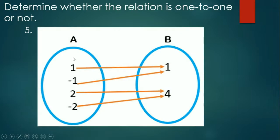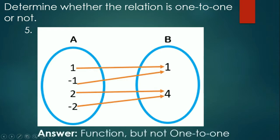Last item: 1 and negative 1 are both paired to 1, and 2 and negative 2 are both paired to 4. Each element of A has only one arrow, so it is a function. But 1 and 4 are both repeated in set B — two arrows arrive at each. Therefore, it is a function but not one-to-one, because the elements in B are not unique.